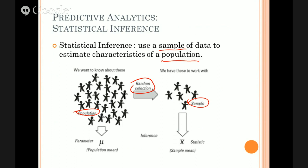Let's look at this diagram. These people here represent the whole population — the whole group of people we're interested in: all Australian adults, or all the people signed up for this subject, or whatever. What we very often do is take a random selection of those people and get a sample. In this case, we've got a big population of around 20 or so people and a sample of just six. Obviously, the numbers are normally much bigger than that, but you get the idea. What we want to know about is the population; what we have to work with is just the sample.